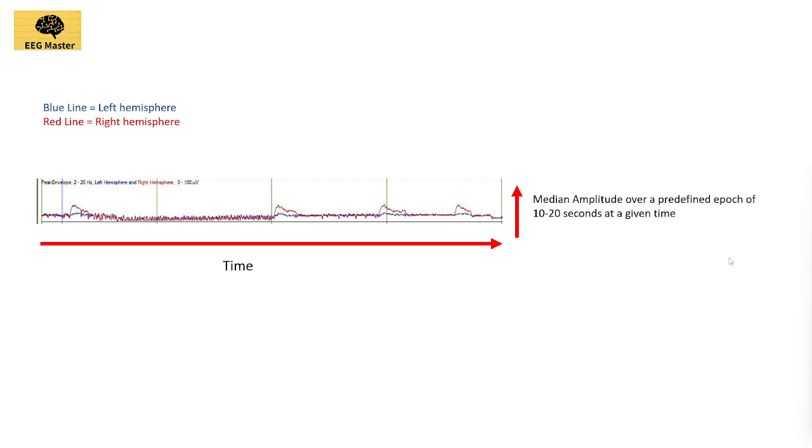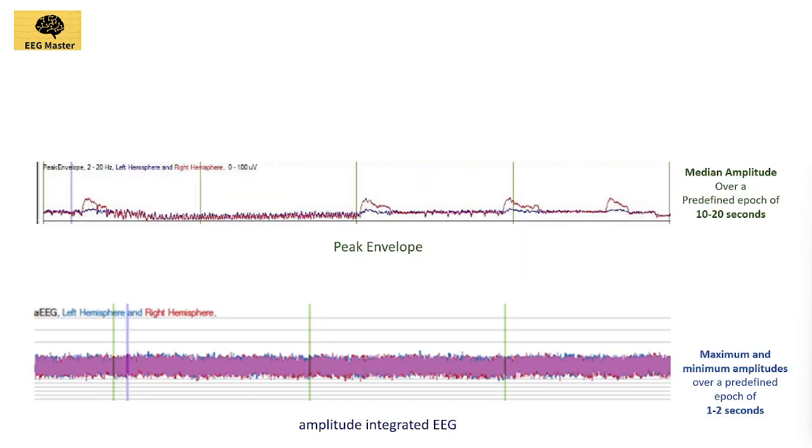Envelope trends are different than amplitude-integrated EEG, where a colored band marks both maximum and minimum amplitudes over a predefined epoch of 1-2 seconds, plotted over a semi-logarithmic scale.